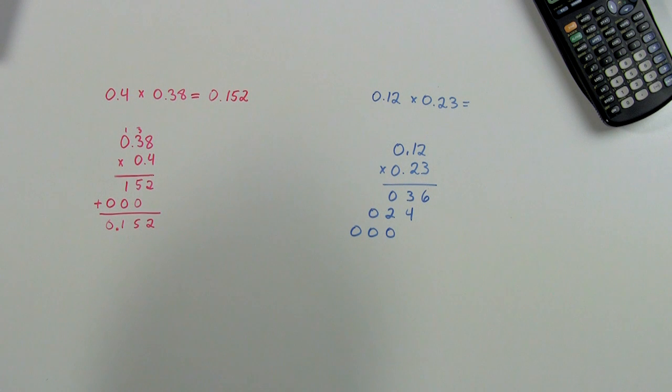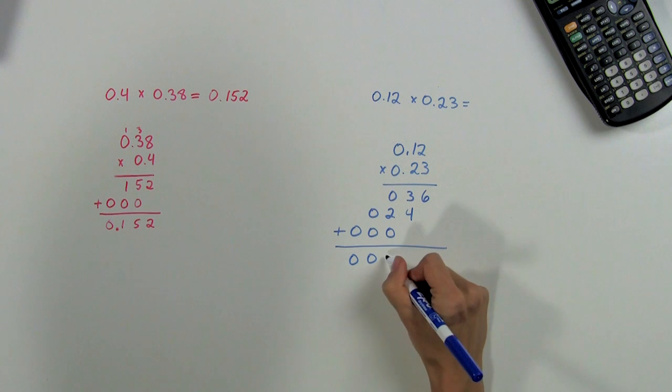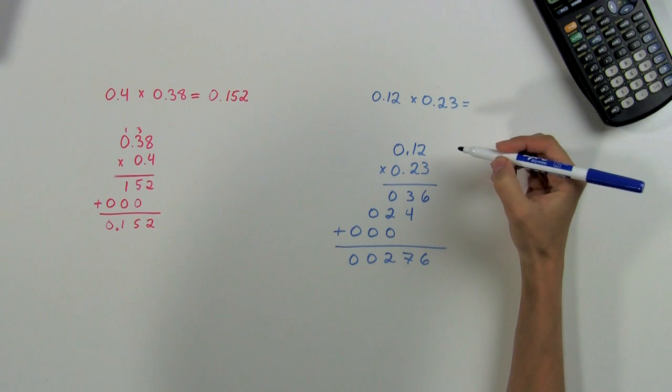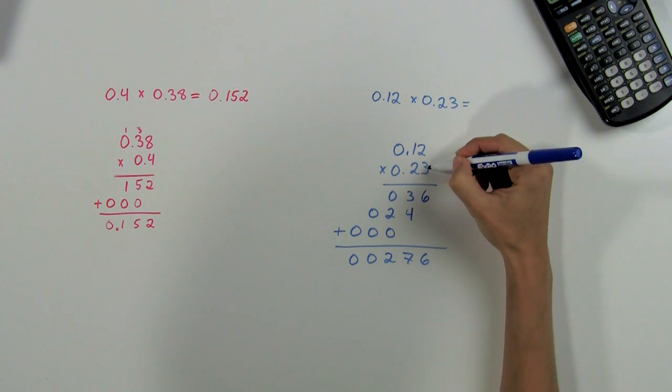Now we add up all our products and we get zero, zero, two, seven, six. The last step is to count the number of digits to the right of the decimal points, and here we have one, two, three, four.